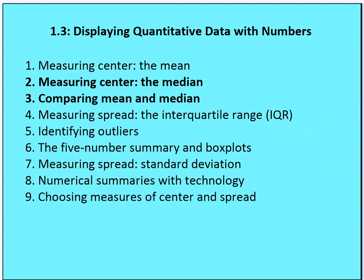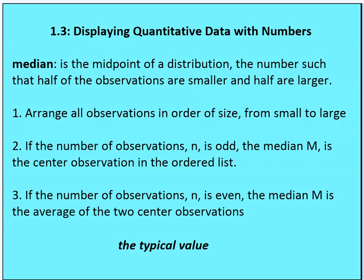So let's talk about median and comparing mean to median. The median is the midpoint of a distribution — the number such that half of the observations are smaller and half are larger. The way you want to find the median is to arrange all the observations in order of size from small to large. Many times you're given a bunch of data that is not presented in order, so you have to order it first from smallest to largest.